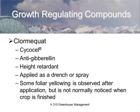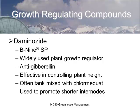Chlormequat goes by the brand name Cycocel. It's an anti-gibberellin used as a height retardant, applied either as a foliar spray or a soil drench. It's been around forever — basically a salt, so it can cause some foliar yellowing, but when the crop is done we usually don't notice it.